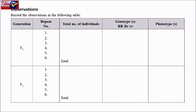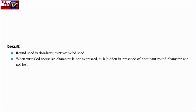Observations: Round seed is dominant over wrinkled seed. When the wrinkled recessive character is not expressed, it is hidden in the presence of the dominant round character and not lost.